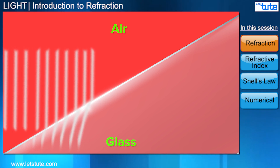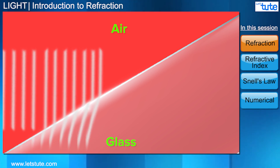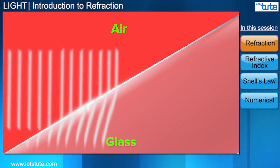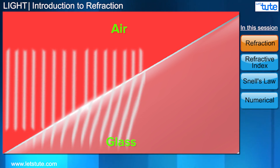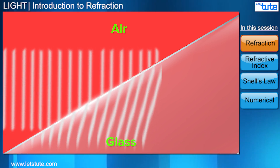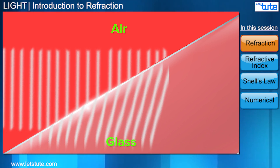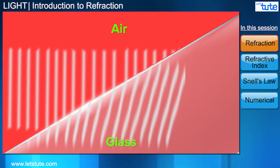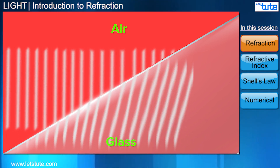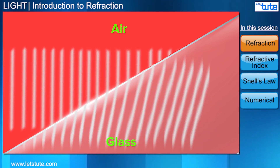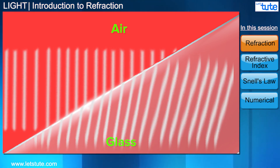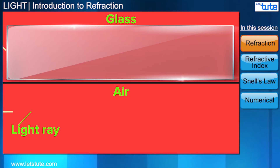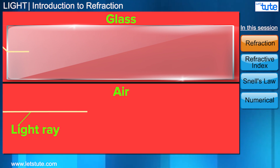one part of the wavefront will reach the glass and slow down, while the other part will be moving at the same speed as before. This is what causes the change of direction, because to keep the wavefront intact, the light has to bend — as you can see on the screen.